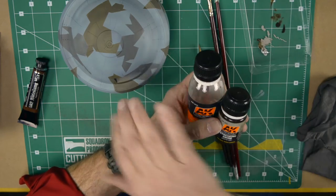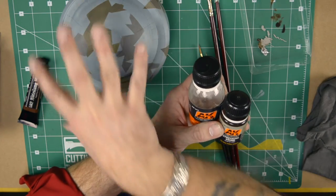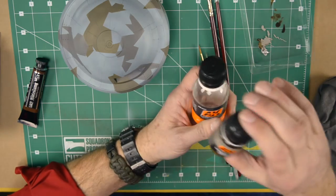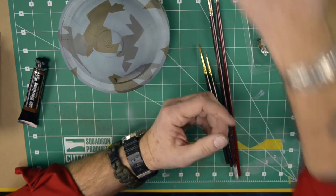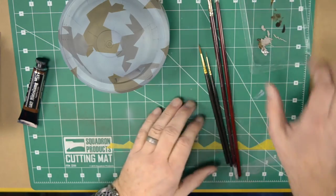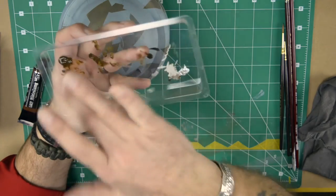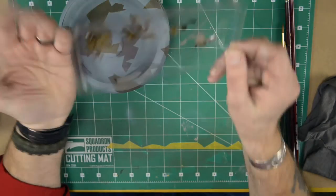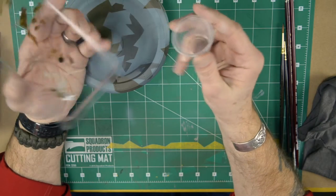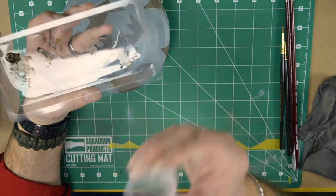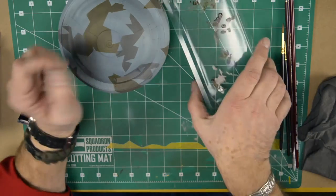I also have the Odorless Thinner from Abteilung 502. I have AK Interactive thinner and their streaking grime. These I use to paint spots of leaked fuel or rust streaks. For this purpose I like to squirt some oil in a little blister. You can find these cups around the house or at fast food restaurants.